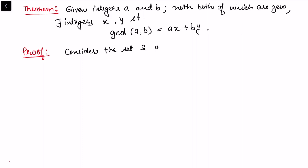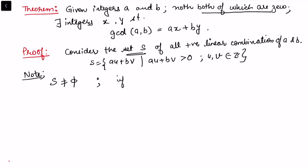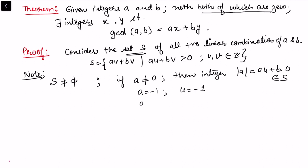To prove this theorem, consider the set S of all positive linear combinations of a and b: S = {au + bv : au + bv > 0, u, v ∈ ℤ}. We first note that S is non-empty. Since not both a and b are 0, let a ≠ 0. Then |a| = a·u + b·0 belongs to S, choosing u = −1 if a is negative or u = 1 if a is positive. Hence |a| belongs to S and S is non-empty.